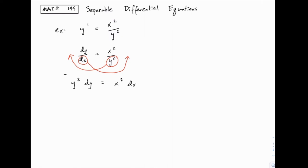At this point we can integrate both sides, and notice that we have an integral with respect to y on the left side, an integral with respect to x on the right side, and both of those are integrals that we can easily handle. When we do we get one-third y cubed on the left side, and one-third x cubed plus c on the right side.